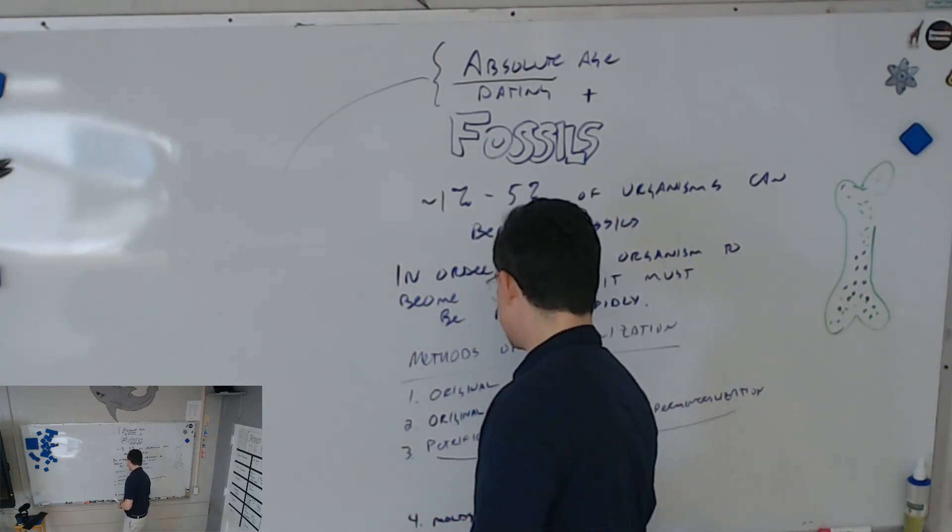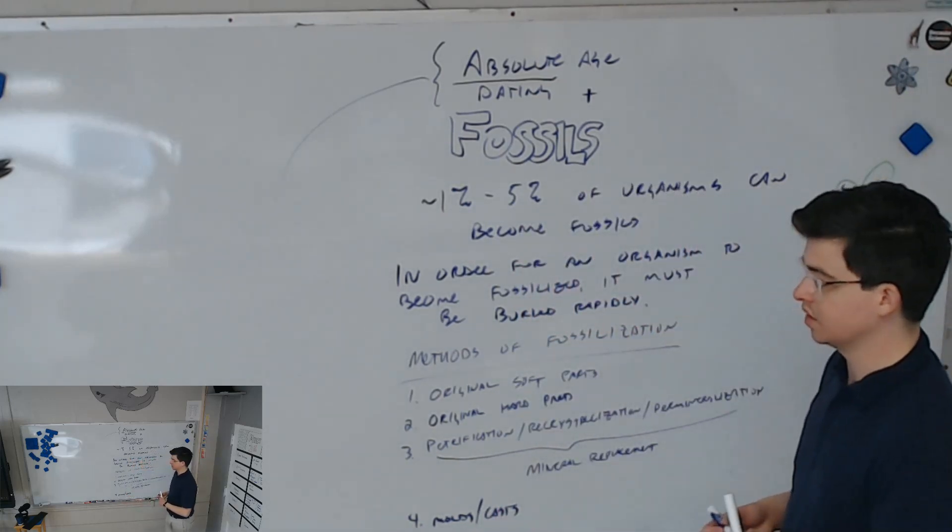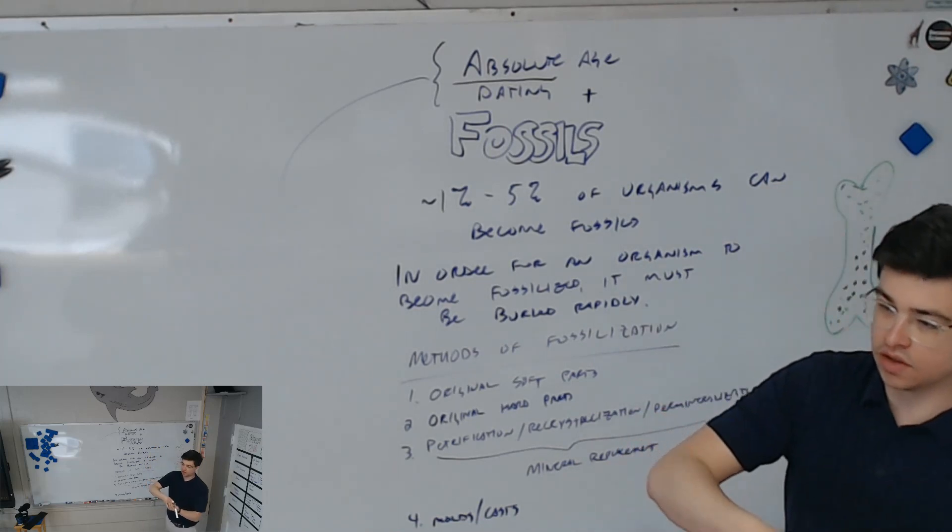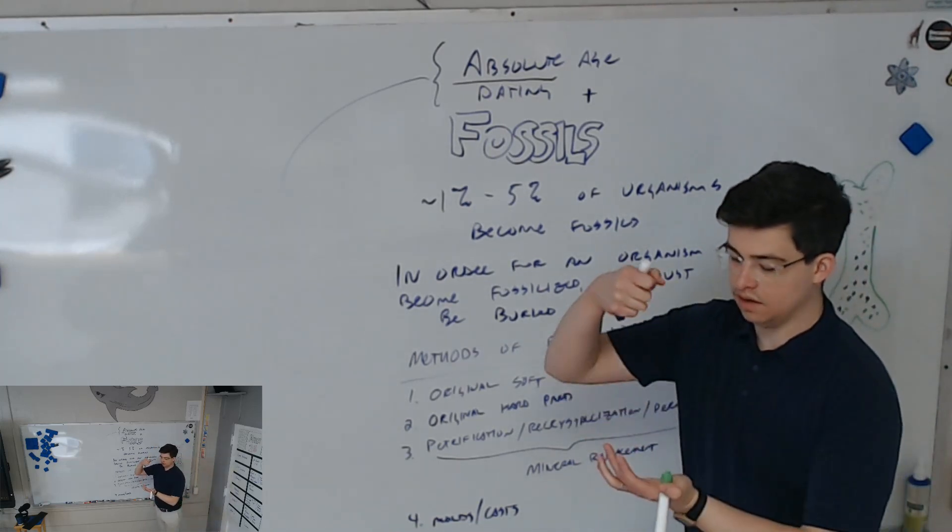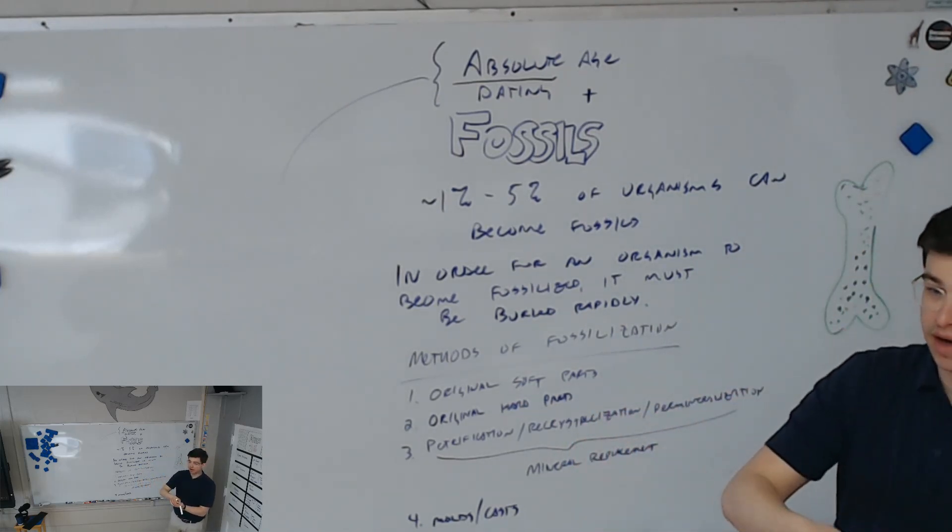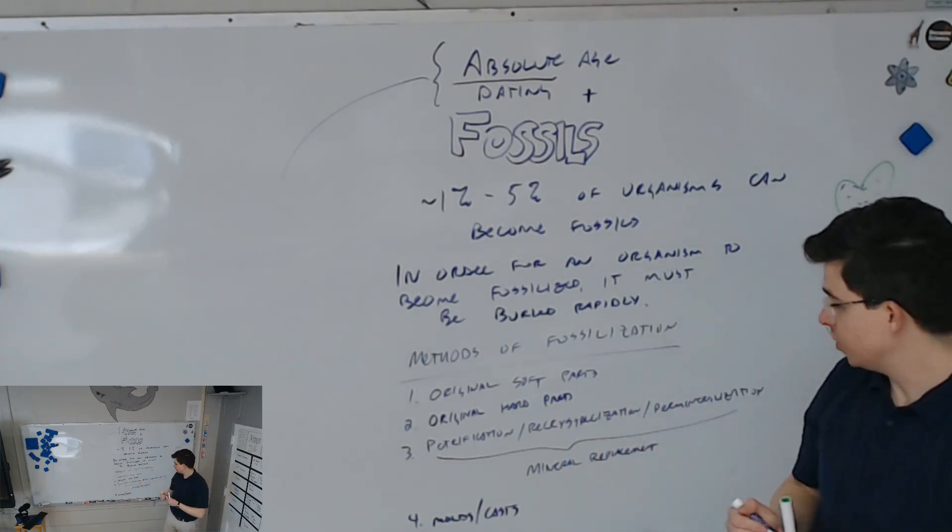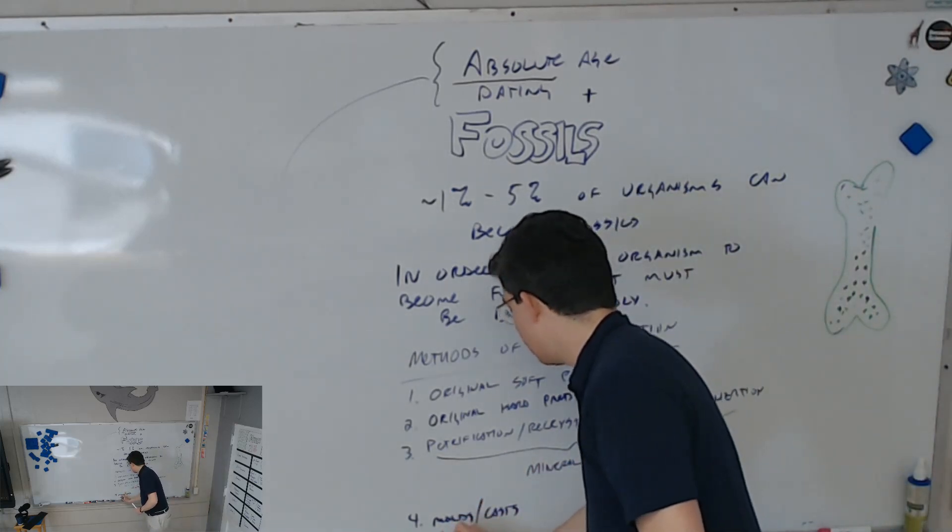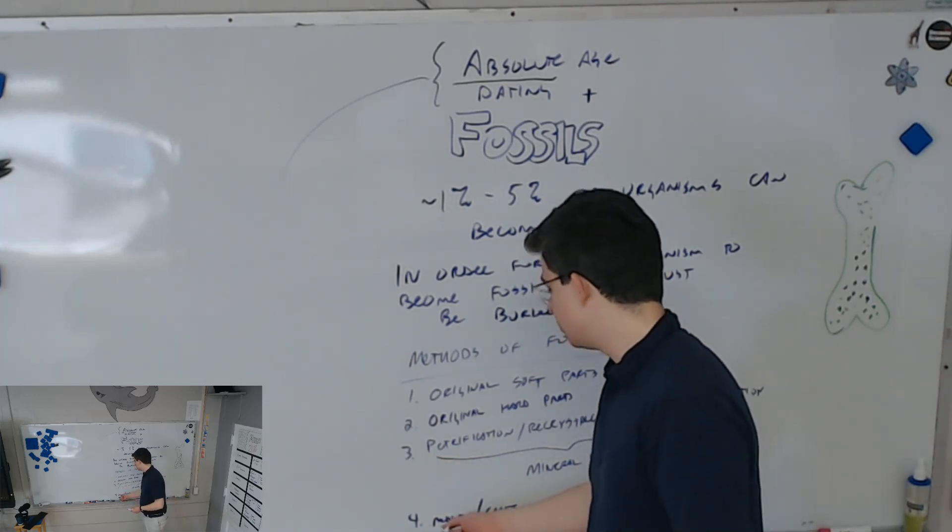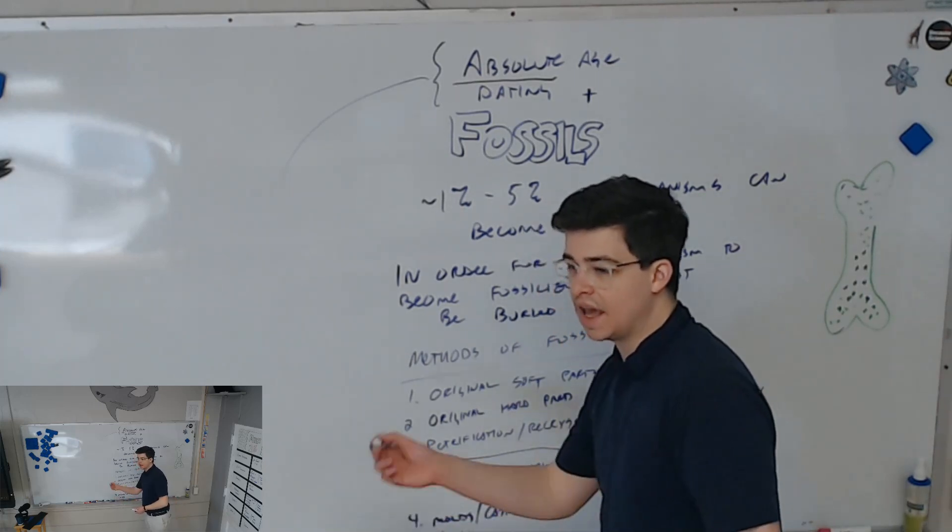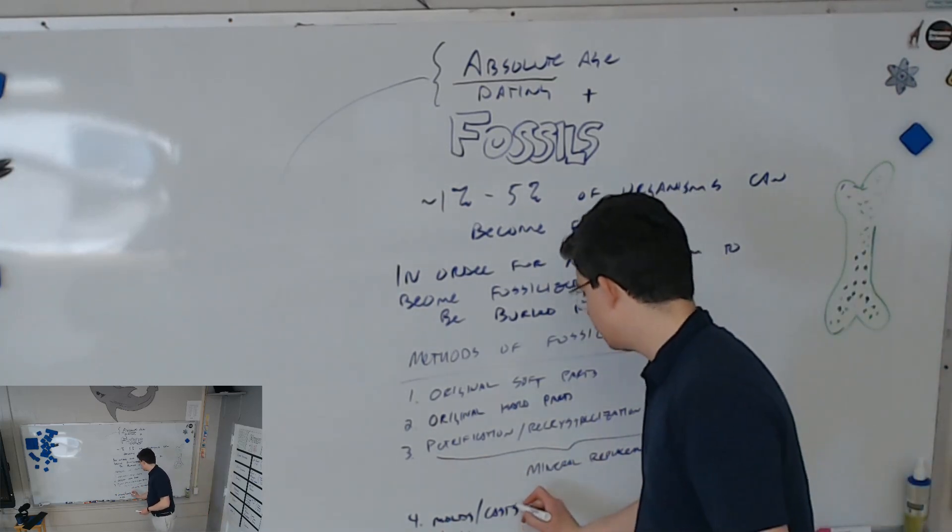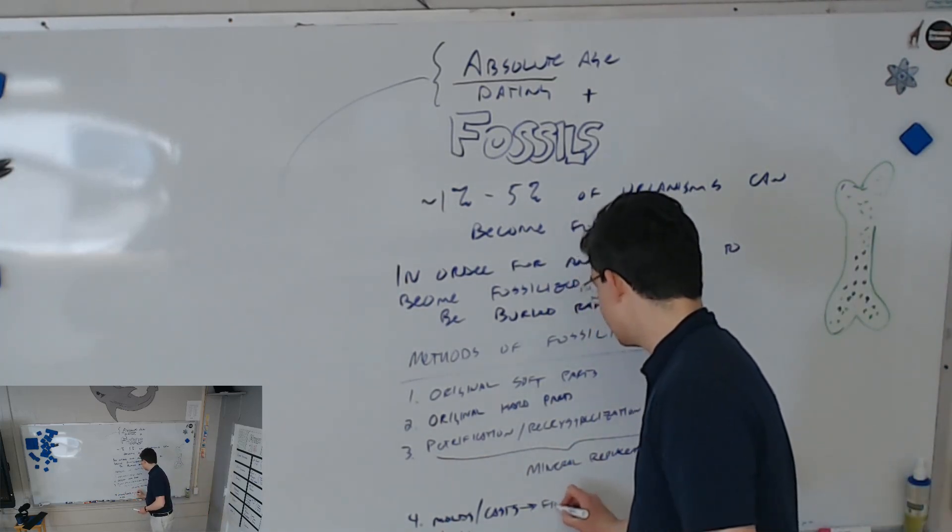That gets us to our last thing, which is called molds and casts. A mold is an imprint left by an organism. There's some soft mud or clay, and maybe a footprint or shell makes a hole in the shape of that organism. That's a mold - a hole, a depression. A cast is formed if sediment comes along and fills in that hole. The cast is a fill-in - it's the shape of the organism itself.